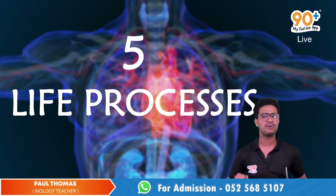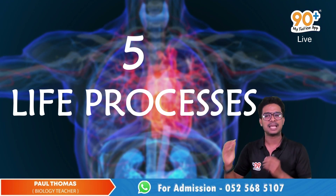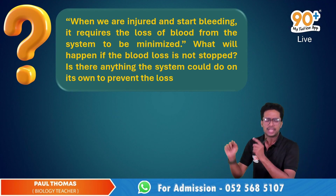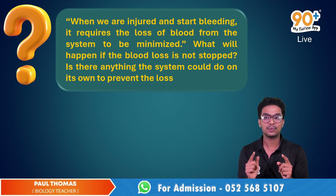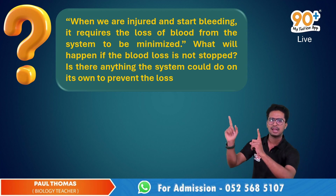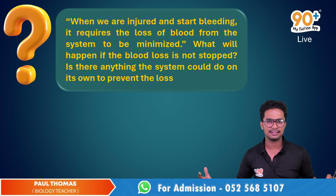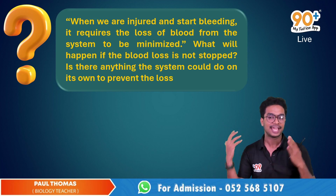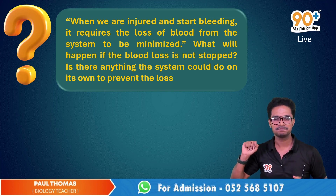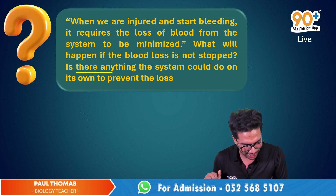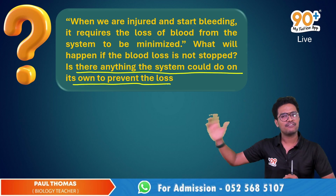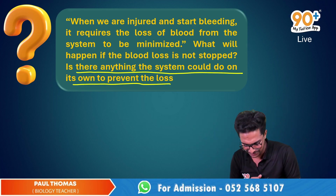Today we are going to discuss one of the most important questions from chapter number 5, Life Processes. The question is: when we are injured and start bleeding, it requires the loss of blood from the system to be minimized. What will happen if the blood loss is not stopped? Is there anything the system could do on its own to prevent the loss? Before answering, let's play an animation.